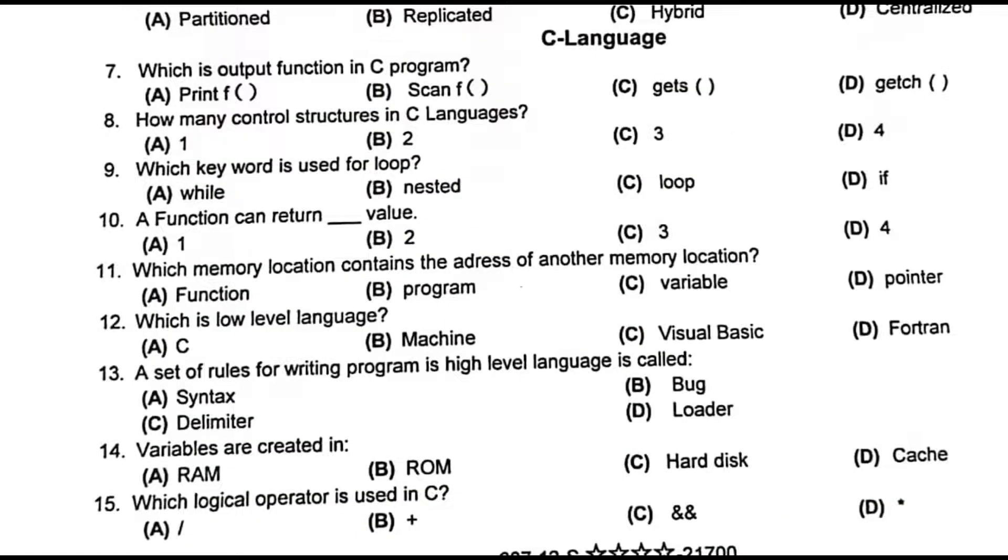Which is output function in C program? Printf function. How many control structures in C language? Three. Which keyword is used for loop? While. A function can return one value.